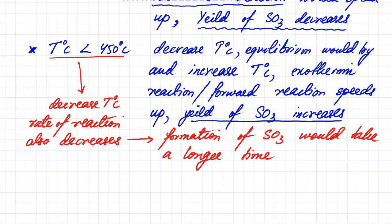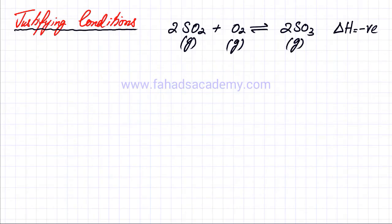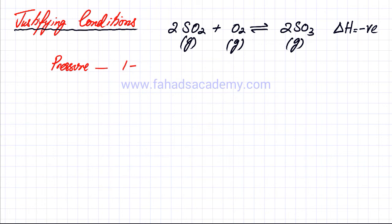Saving time is economical, so it's better to save time rather than keep improving the yield. The second thing we need to justify is our use of pressure. The pressure used in this step — the optimum pressure in the contact process for this reaction — was around one to three atmospheres.